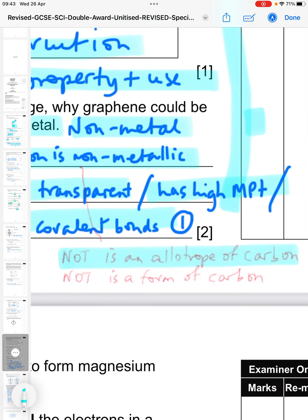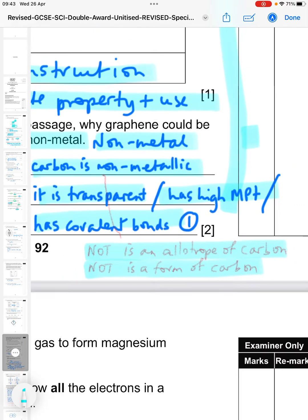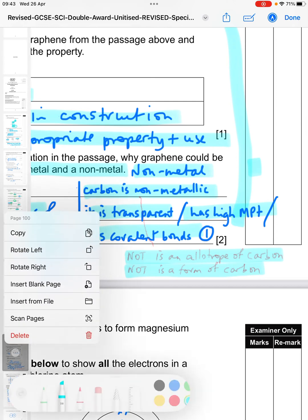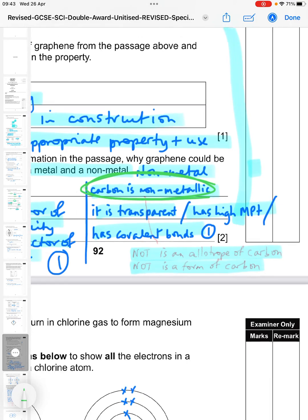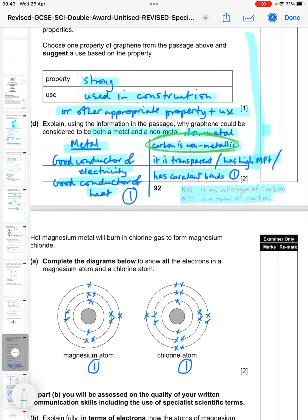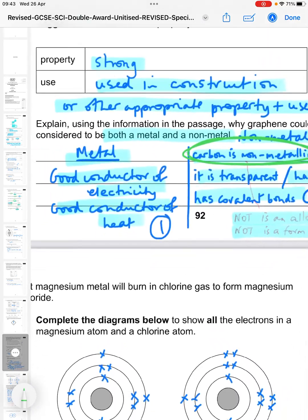And for a non-metal, you can say carbon is non-metallic. The fact that it's transparent, you can get that for metal. It has a high melting point and it has covalent bonds. So just one point on each side there, one for metal and one for non-metal, would get you two marks. Now what I've said here as well is not because it's an allotrope of carbon, not as a form of carbon. That's not giving you any extra information. I haven't just said because it's carbon - I said because carbon is a non-metal or carbon is non-metallic. What's the difference there?